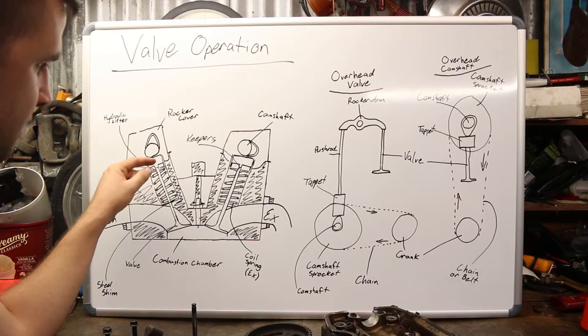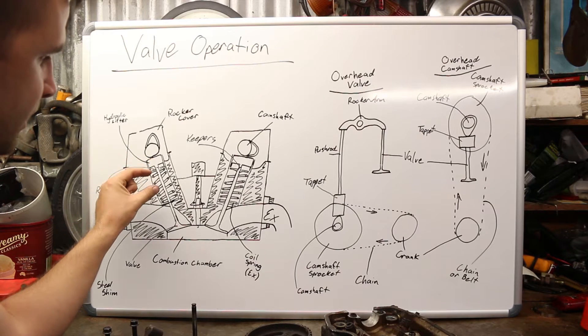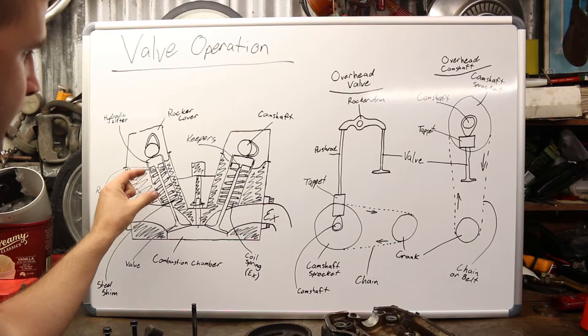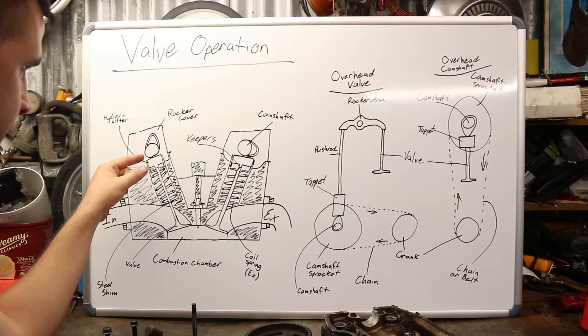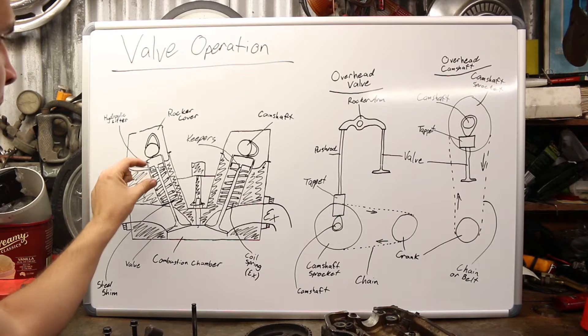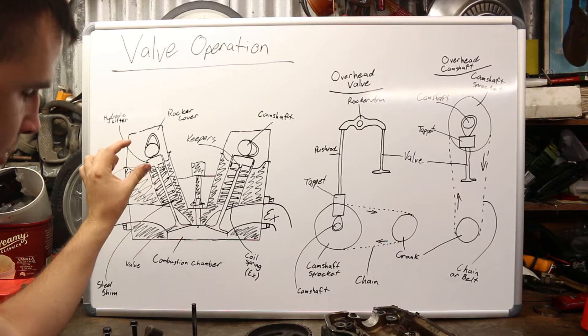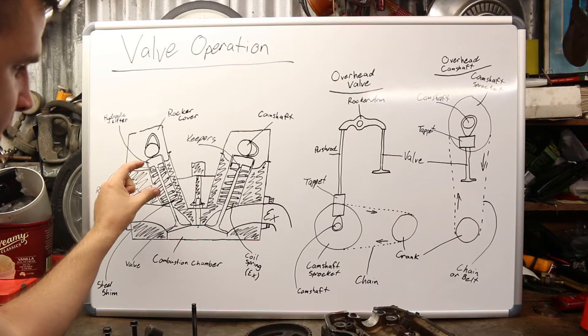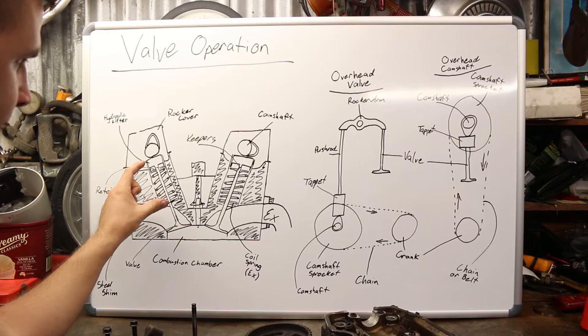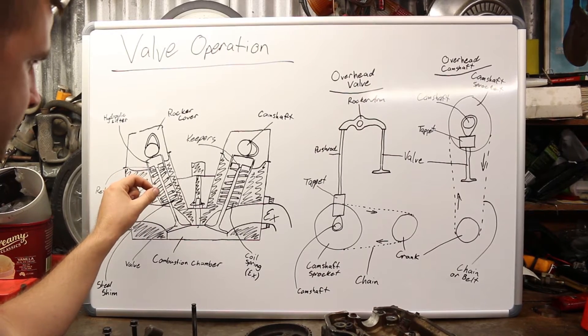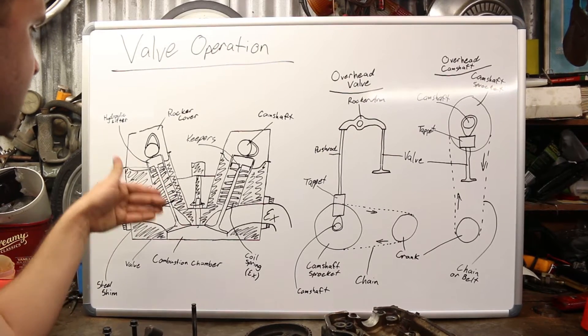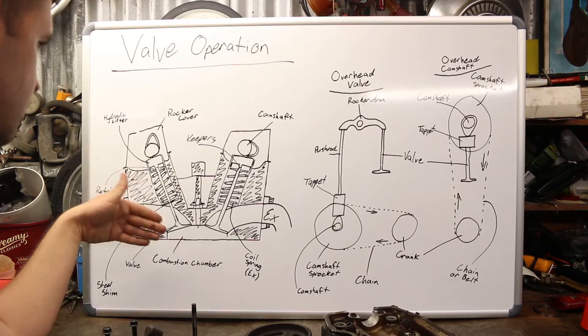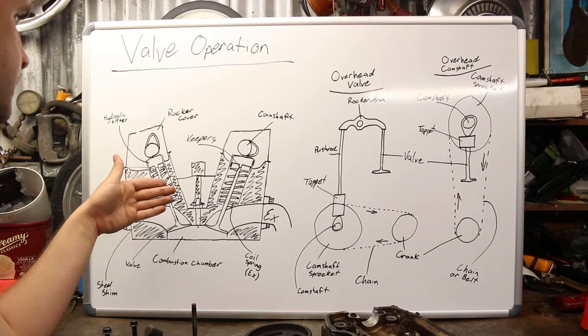Now the spring doesn't push the valve open. It's the lifter that pushes it open. The spring is there to keep tension so that once this lobe has moved off the top of the hydraulic lifter, the spring will uncompress because of its tension and it will force the valve to close. So that's basically how it will open and close.